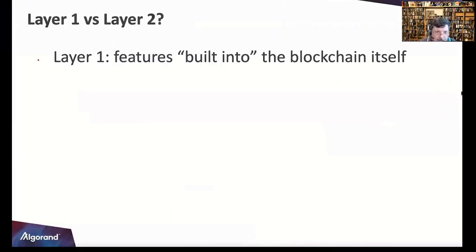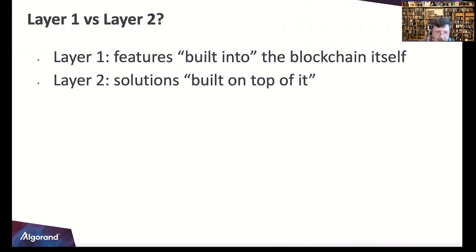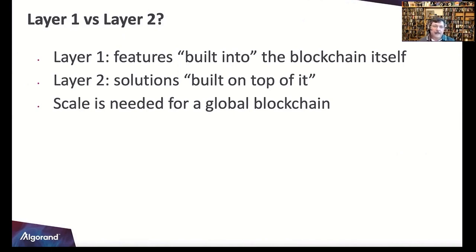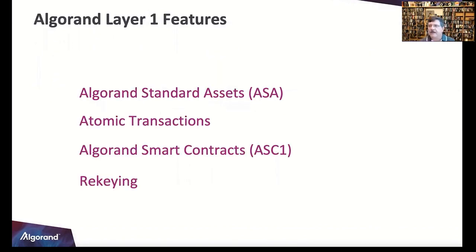Layer one features are built into the blockchain itself; layer two solutions are built on top. The biggest consideration here is scale — Algorand has scalability, security, and performance. If you try to put a VM on layer one it'll bog it down — it's got to be lean and mean. In this section we're going to talk about ASAs — Algorand Standard Assets — atomic transactions, smart contracts, and rekeying.